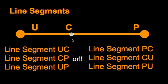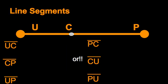Sometimes you can have another point on your line segment, and then all of a sudden you get all sorts of different names. You could name it line segment UC, line segment CP, line segment UP, or the other way: line segment PC, line segment CU, line segment PU. Never, never, never name a line segment with more than two letters — always use two letters for line segments. Here's the shorthand on how to name that line segment.